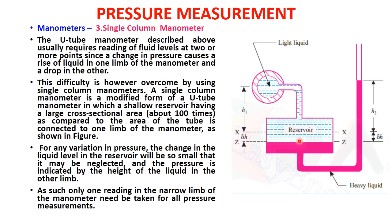The third type is the single column manometer. Here there is one reservoir connected to the point where pressure is to be measured, with the other end open to atmosphere. A heavy manometric fluid fills the reservoir. As pressure changes at the measurement point, it acts on the heavier liquid, which changes its position in the second limb. This allows pressure measurement using a single column.